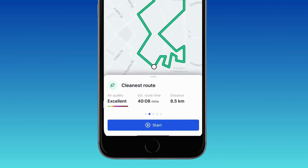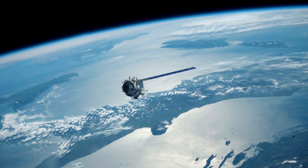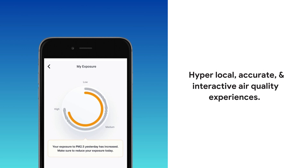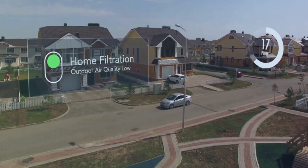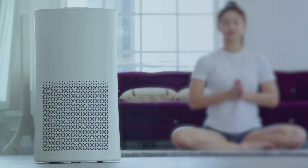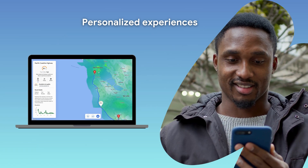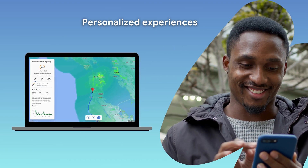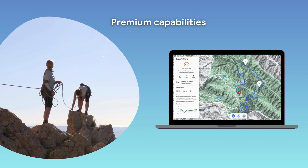Benefits include data integration into maps in order to visually convey air quality information to your users using multi-layered, continuously validated geospatial data. Differentiating your brand via hyper-local and interactive air quality experiences that help your users make quicker and informed health-related decisions, to increase engagement and inspire greater brand loyalty due to the promotion of environmental resilience in the face of climate change. As well as offering users personalized and health-centric tools to inform daily decision making, while expanding a traditional revenue stream with premium capabilities.